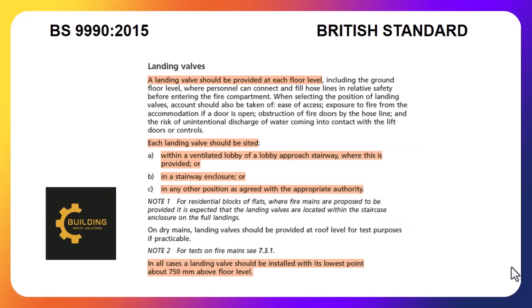According to the standard, there should be one landing valve at each floor level. Each landing valve should be located within a ventilated lobby of the building floor, with the most appropriate location being near the staircase. The landing valve should be installed so that its lowest point is 750mm above the floor level.